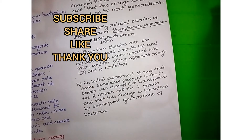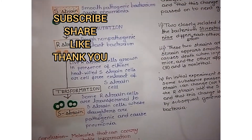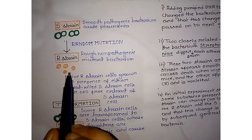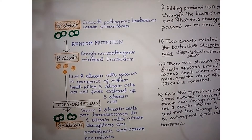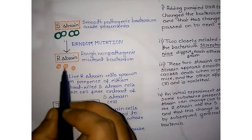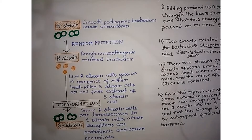The two strains are called R-strain and S-strain. R-strain is non-lethal; S-strain is lethal. When we inject S-strain into mice, it leads to the death of the mice. But R-strain does not show any pathogenic effect when injected into the animal.